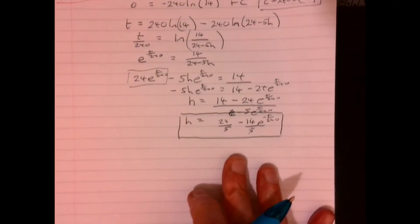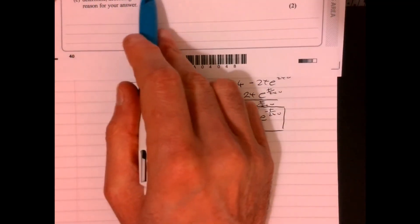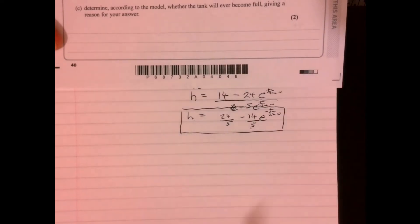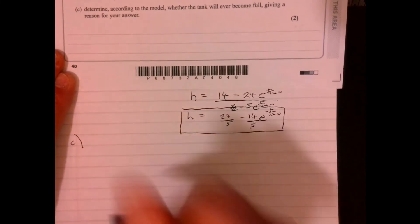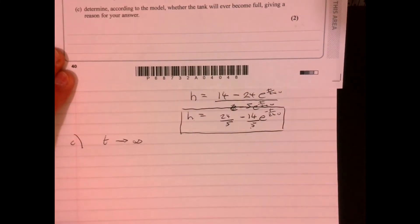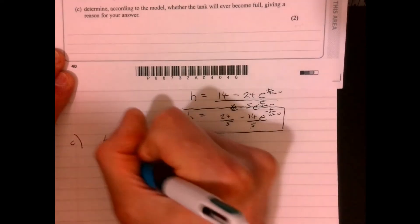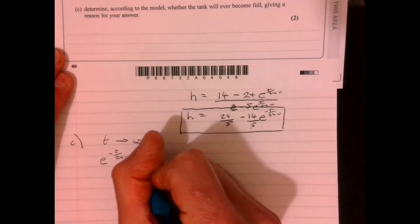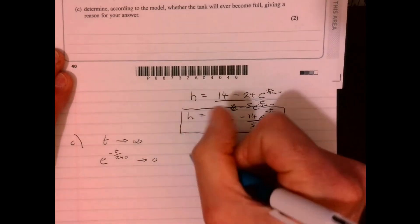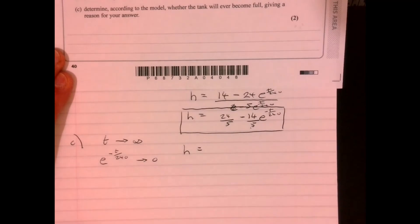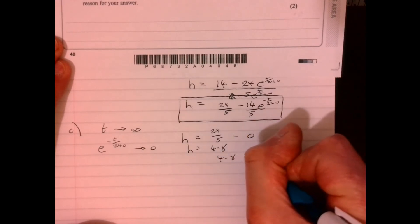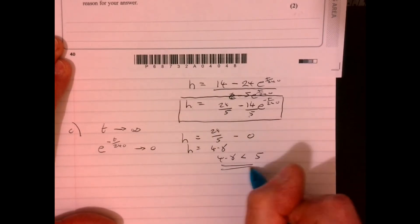Now the last bit, just a bit of interpretation. It says, given that the tap remains open, determine according to the model whether the tank will ever become full. There are two marks on this. So let's think about as t gets really large, it's going to approach infinity. What's going to happen to this figure? If that's like a really, really big number, basically the answer there is going to be 0. So if that were the case, then the height would be 24 over 5, effectively minus 0. That's 4.8. 4.8 is less than 5. So that would be okay.